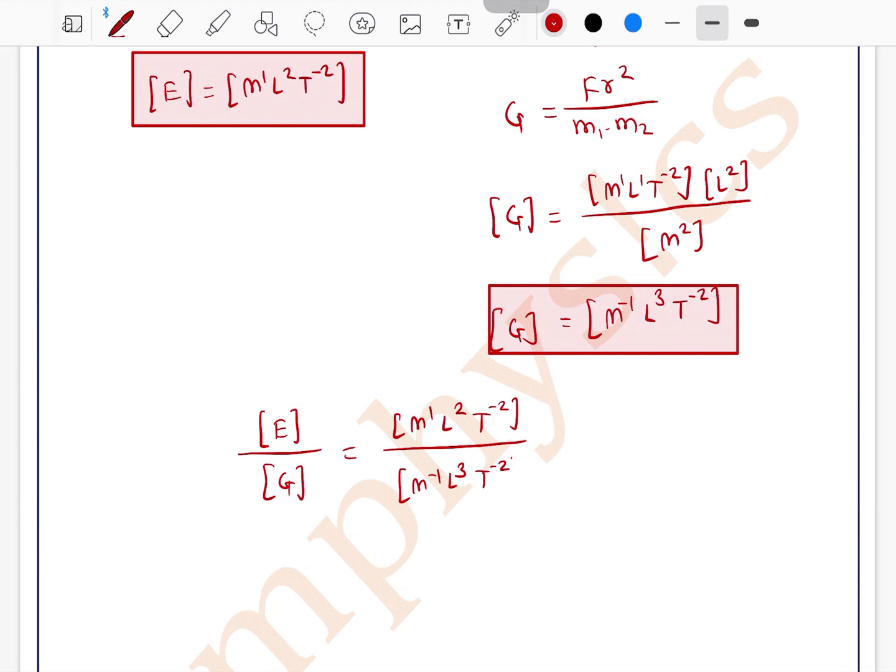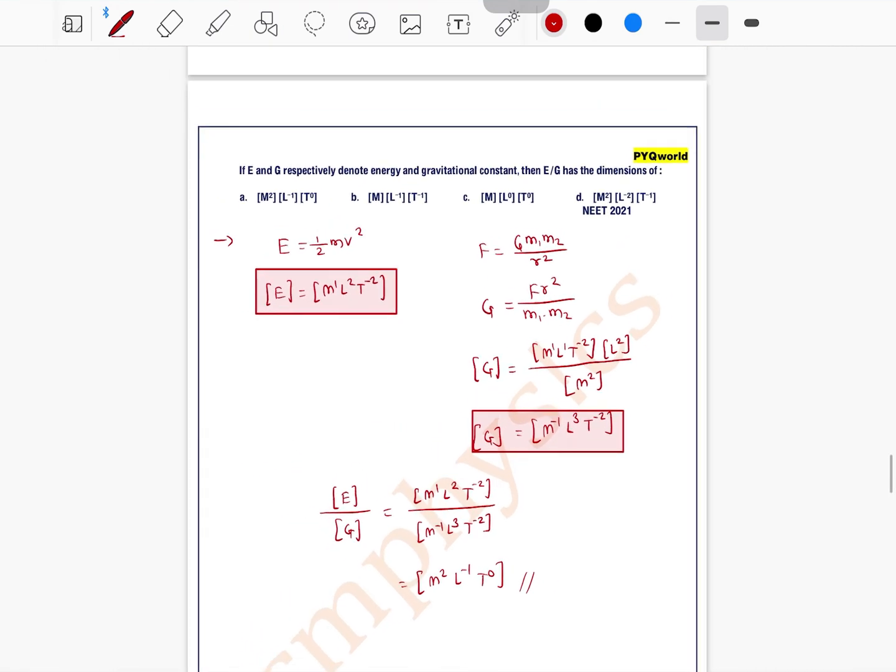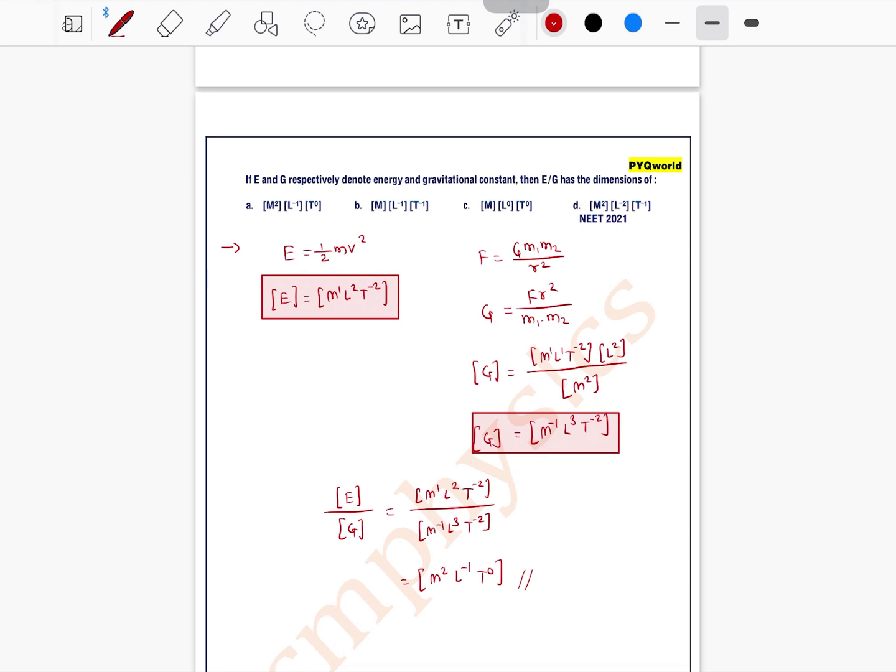This gives us m²l⁻¹t⁰. This is the answer. Option a, m²l⁻¹t⁰, is the correct one.